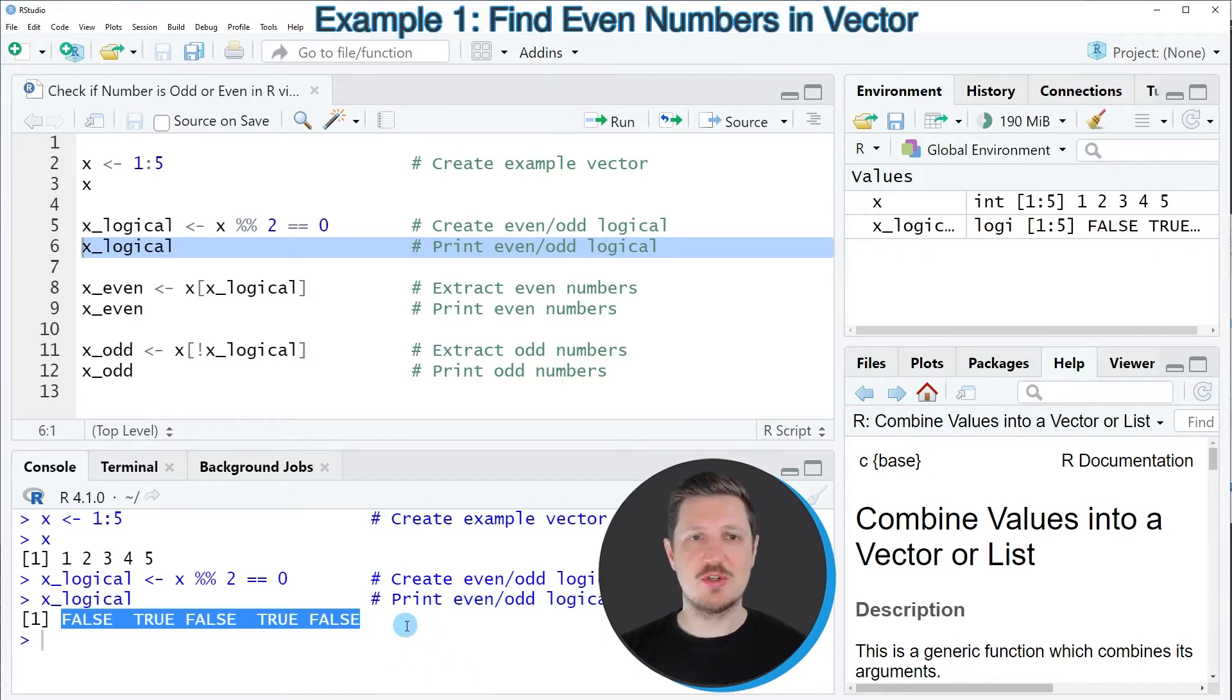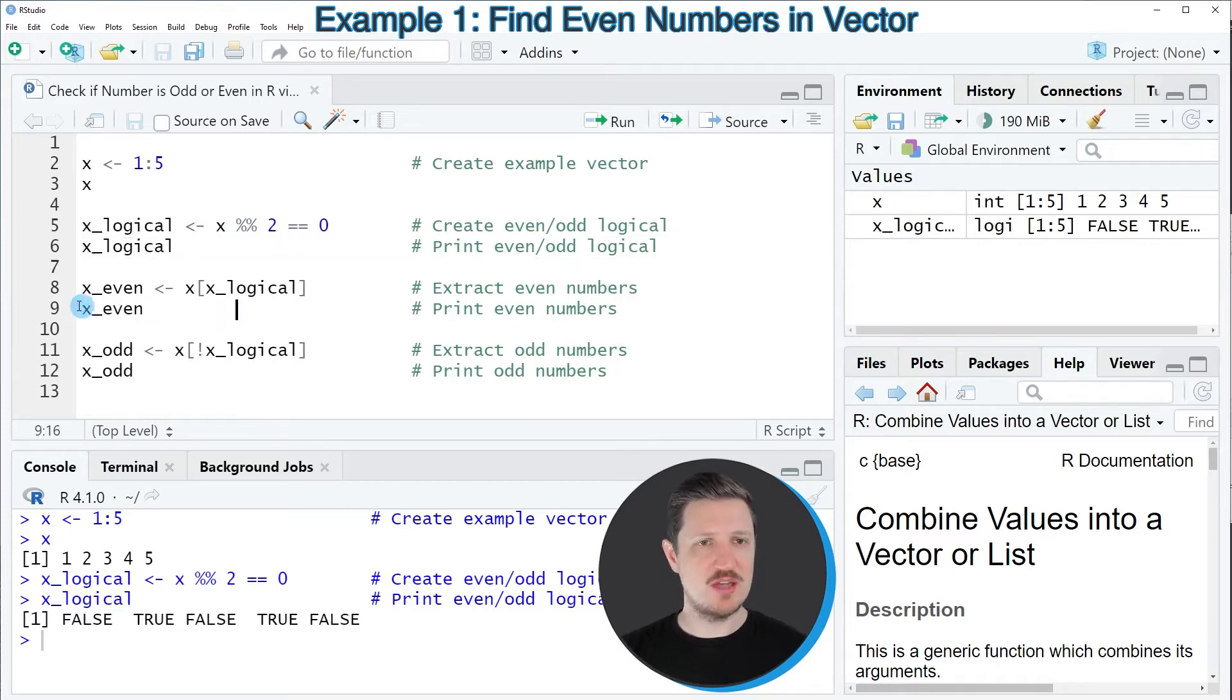It's also possible to use this logical vector to subset our data object and create a new vector object which contains only the even numbers. I'm showing you that in line 8 of the code. In this line, I'm subsetting our input vector x based on the new logical vector object x_logical that we created in the previous lines.